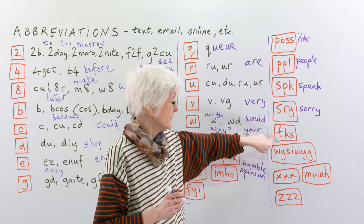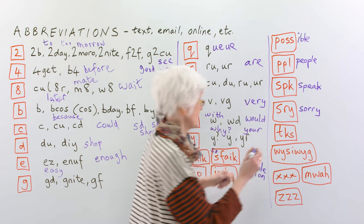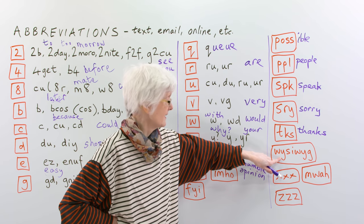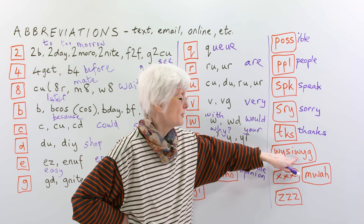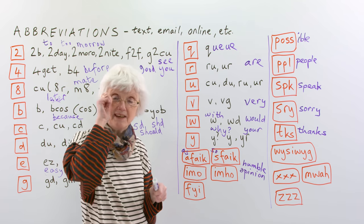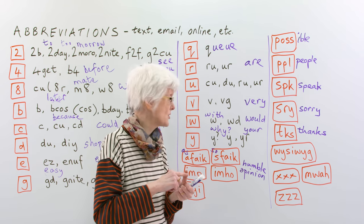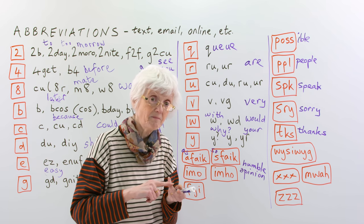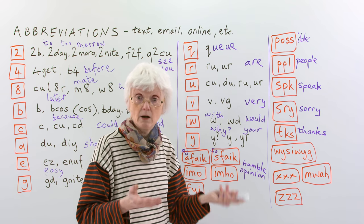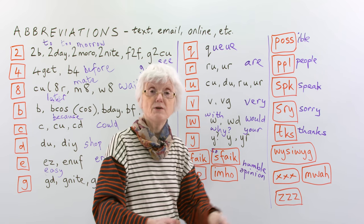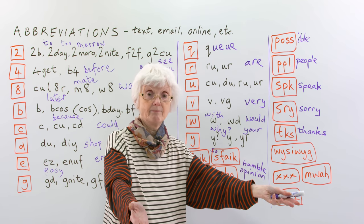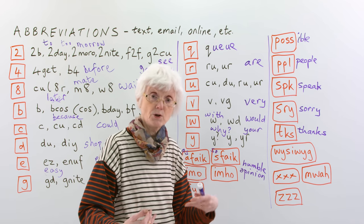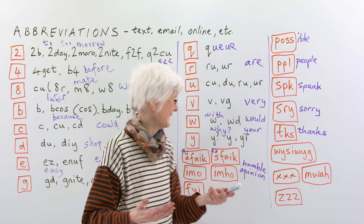And this one is probably quite easy. Tux is thanks. Thanks. And then this one is very funny. W-Y-S-I-W-Y-G. And if you haven't seen that before, it's what you see is what you get. So, if you're buying something, for example, a car, what you see in front of you, if you pay the money, if you buy it, what you see there is what you get. You just see it, and if you like it, that's what you're going to buy. What you see is what you get. Okay. It's a bit funny, that one.